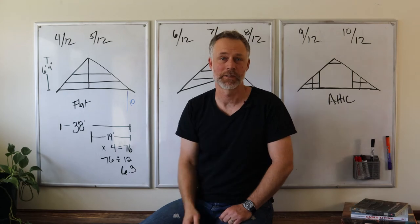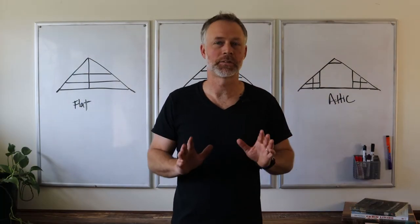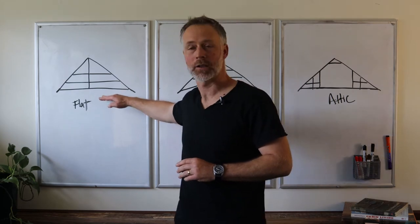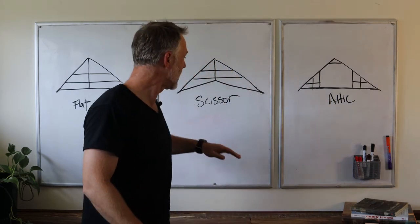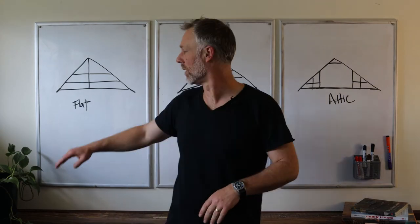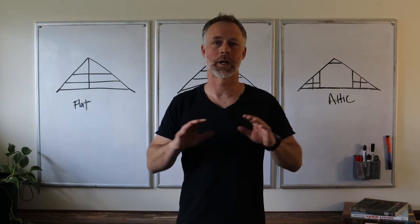So the basic trusses that you're going to choose from are simply going to be a flat cord truss, a scissor truss, or an attic truss. Now the flat cord is almost predominantly what every pole barn is going to have.